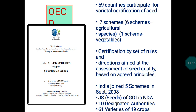Under the OECD scheme, 59 countries participate in the seed scheme. Within the seed scheme, there are seven schemes — six related to agricultural species and one related to vegetables. Certification is based on a set of rules, regulations, and agreed principles against which quality is assessed.